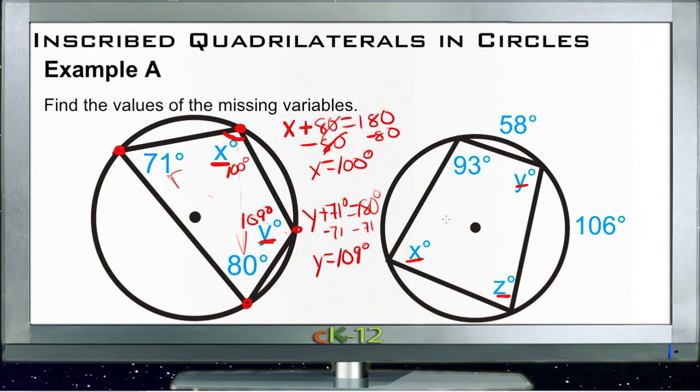Then for our other circle, the first thing we can do is find, well, z is pretty easy. z and 93 will total 180 degrees. So we have z plus 93 equals 180.